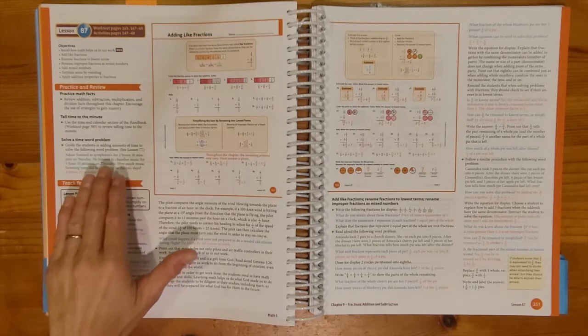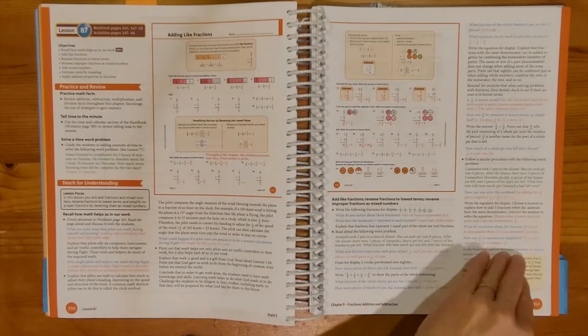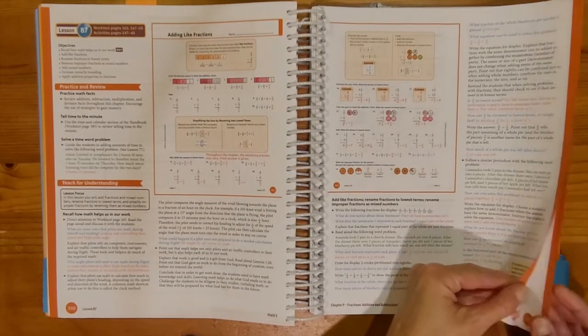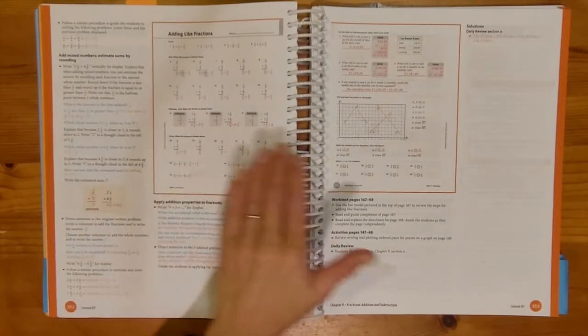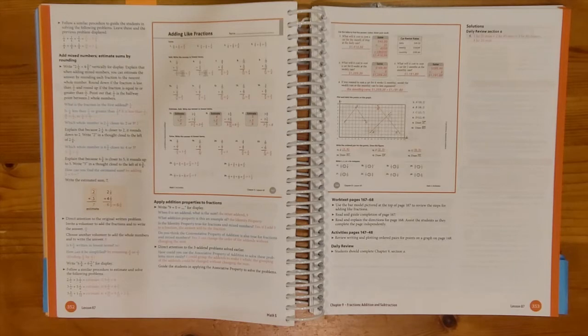You also may notice some green font. These are word problems that I would be reading word for word, and then we would be working them out together as part of our lesson. You may also notice that the worktext pages and also the activity pages are embedded into my lesson plans. So I have the answer keys directly in front of me. As we're working out those problems, I'm able to check to make sure that we are working them out correctly.